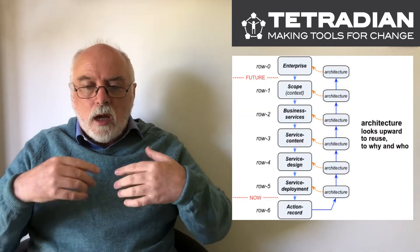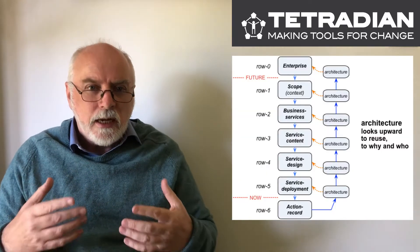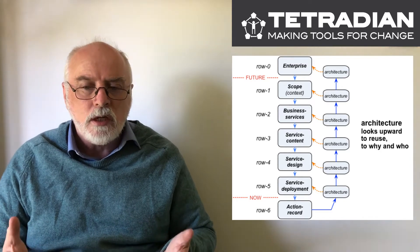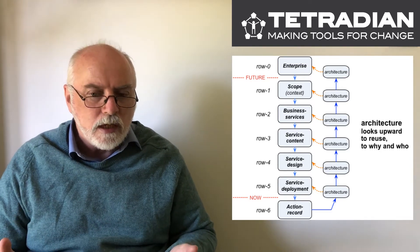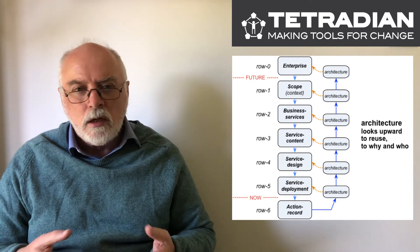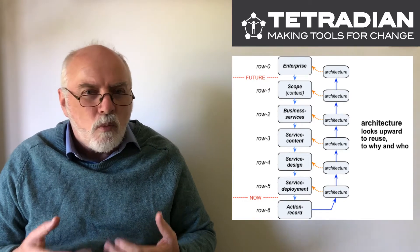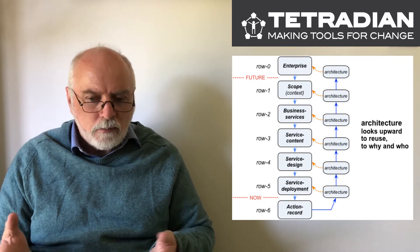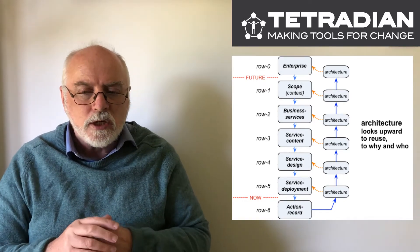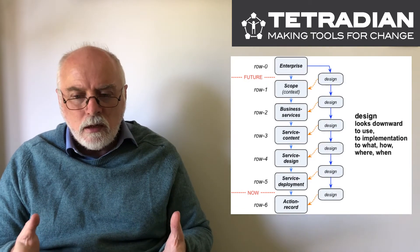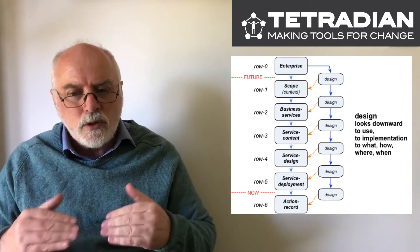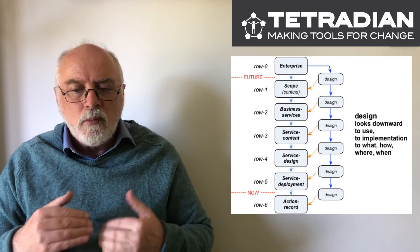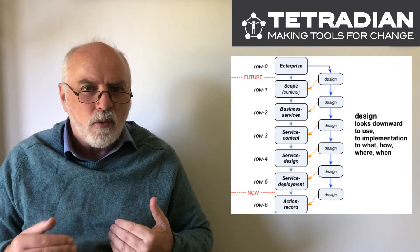All of the other five layers are about things that we can change. Architecture in essence looks upward to the big picture, to new options, to repurpose and reuse, and more at the why and the who of the overall implementation. Design looks downward towards realisation and implementation, more at the how and the what, when and where.